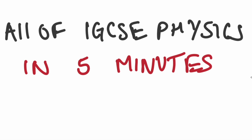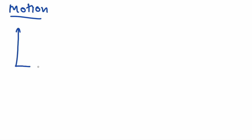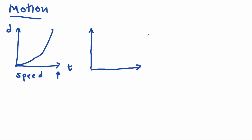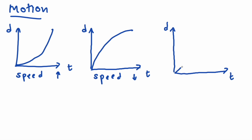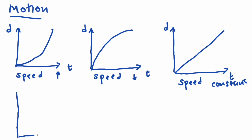All of IGCSE physics in 5 minutes. Let's have a look at the different graphs for motion, starting with the graph of speed increases, speed decreases, speed being constant, and speed being stationary.